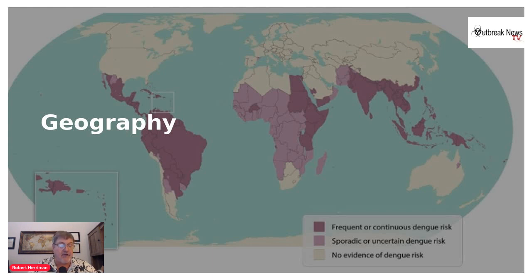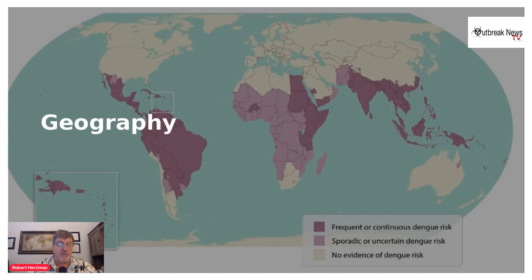Geography: almost half of the world's population, or about 4 billion people, live in areas with a risk of dengue. Dengue is most commonly found in Central and South America, Africa, parts of Asia, and the Pacific Islands, but the disease has been spreading to new areas, including local outbreaks in Europe and southern parts of the United States.